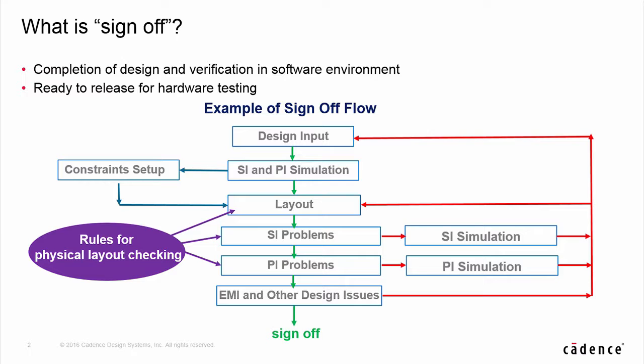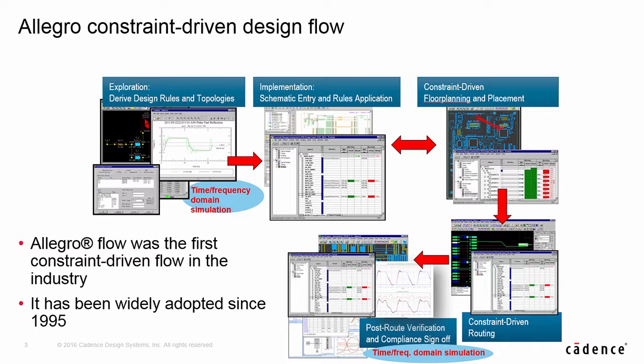The question here is: does this type of flow satisfy today's high-speed design requirements? Or can this type of flow identify or correct all possible design issues and give high confidence to designers about the success of their product? Let's go back a little to see how the sign-off flow we just discussed evolved. The flow is basically constraint-driven without integration with the layout environment. It originated from the first industry constraint-driven flow — the Allegro constraint-driven flow, which was introduced to designers in 1995.